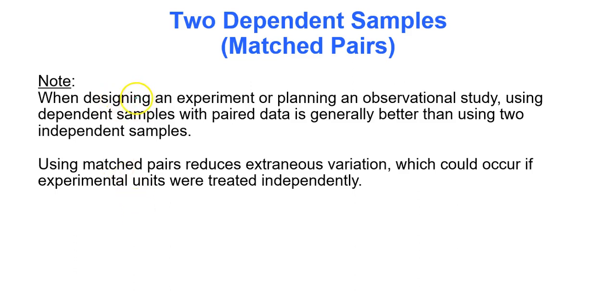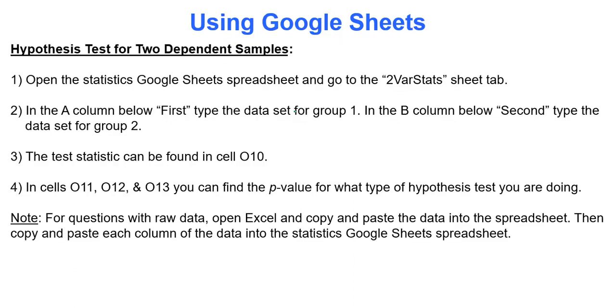When designing an experiment or planning an observational study, using dependent samples of pair data is generally better than using two independent samples because of the creative tactics used in this method. Using matched pairs reduces extraneous variation, which could occur if experimental units were treated independently. That's the power of this matched pairs method.